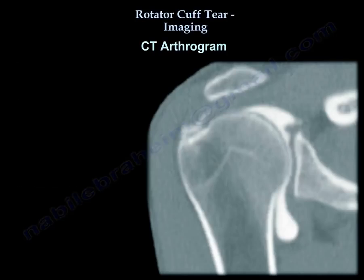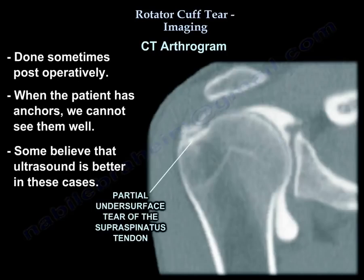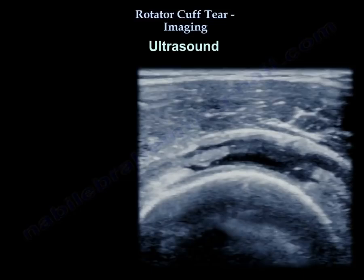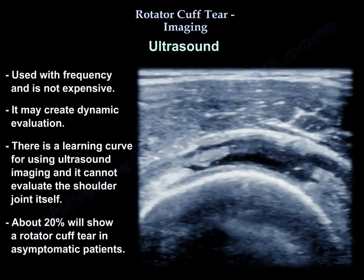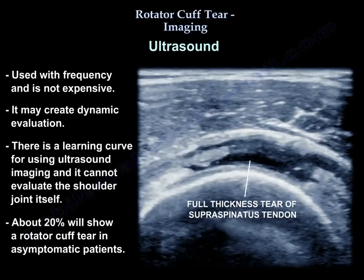CT arthrogram is sometimes used when the case is postoperative and the patient has anchors that obscure visualization, although many believe ultrasound is better in these cases. Ultrasound is used with increasing frequency — it is not expensive, it allows dynamic evaluation, but it requires a learning curve and cannot evaluate the shoulder joint itself. About 20% of asymptomatic patients will have a cuff tear visible on ultrasound.